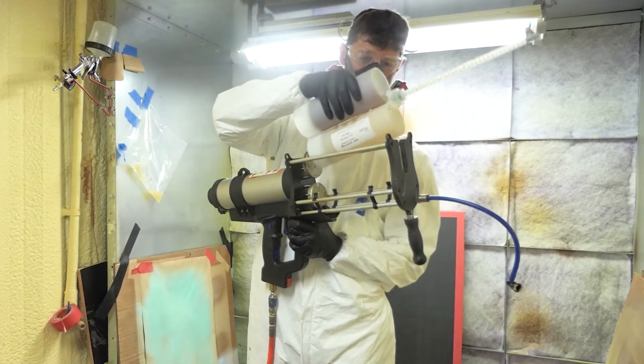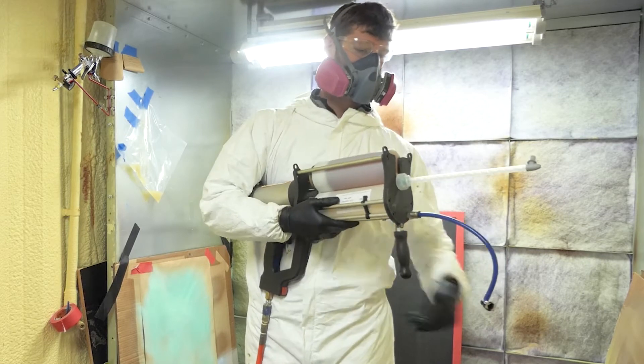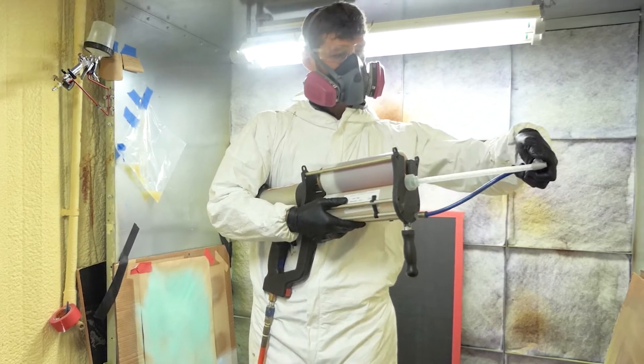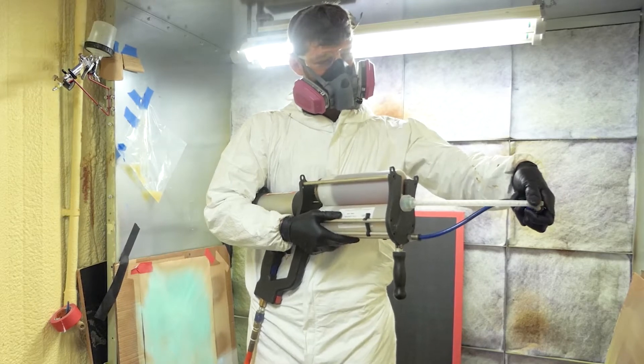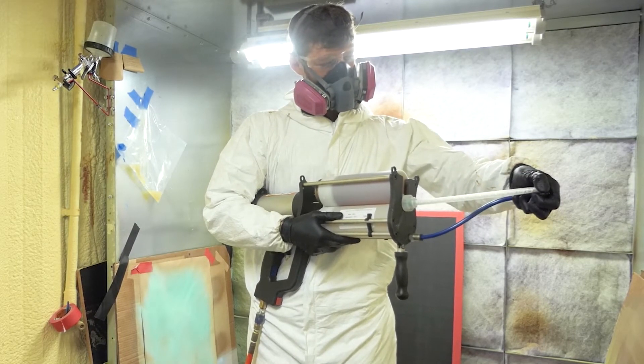With the pistons of the sealant dispenser fully to the rear, insert the dual cartridge into the sealant dispenser until it clicks into place. Connect the air supply at the bottom of the sealant dispenser. Air supply should provide 50 to 100 psi of dry air.